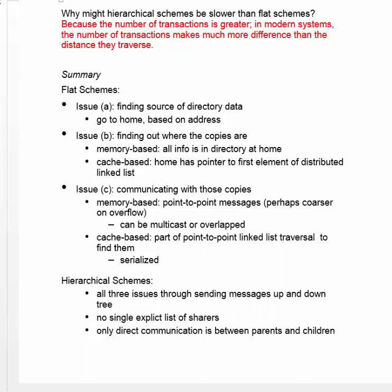The third issue is communicating with those copies. In a memory-based scheme, you send point-to-point messages — usually an individual message to each copy. There's also the possibility of a multicast message, where instead of messaging each sharer individually, you send to the region of the system where some sharers are located, and at the last step the message splits into individual messages for each node with a copy. In a cache-based scheme, you do a linked list traversal going from cache to cache to find all sharers. In hierarchical schemes, all three issues are handled by sending messages up and down the directory tree.